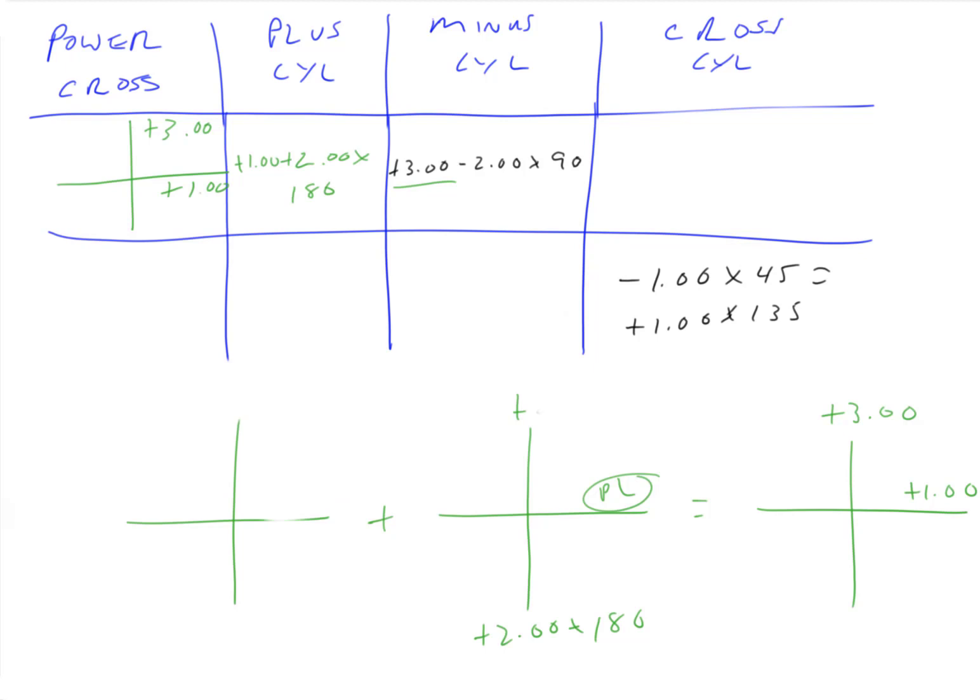And then the cross cylinder is super easy if we have the power cross. We just know we want a plus three up here. We know we want a plus one over here. So this must be plano, this must be plano. So we have plus 3.00 axis 180 flip flip, and plus 1.00 axis 90. Perfect.